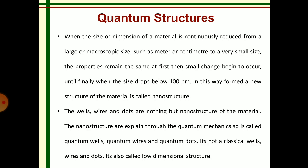Next, quantum structure. When the size or dimension of the material is continuously reduced from the bulk form to very small size while remaining the same property, a small change begins to occur when the size goes below 100 nanometers. In this way, a new structure is formed and this structure is known as nanostructure. Examples of nanostructure materials are wells, wires, and dots.